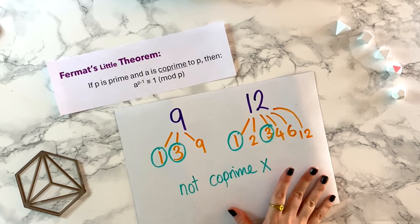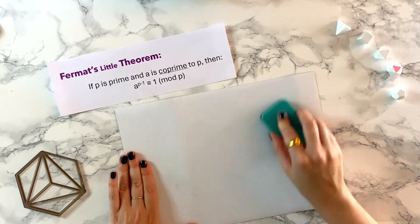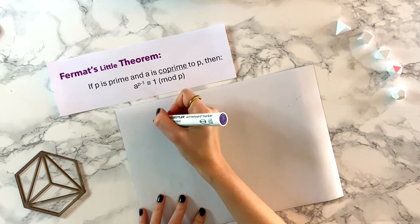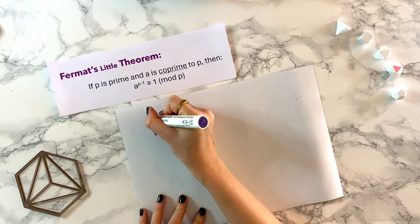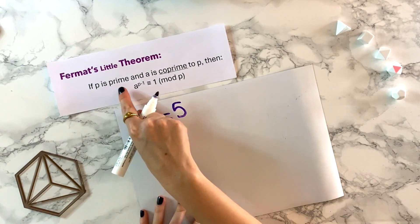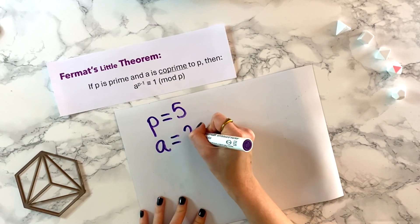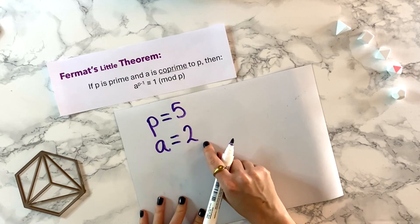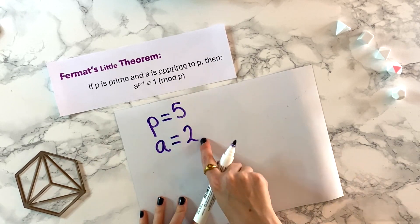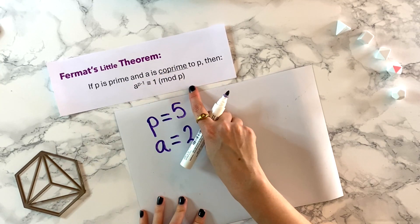So two numbers are co-prime if their only common factor is one. Let's pick two numbers that meet this requirement. Let's say p is five — five is a prime number — and a is equal to two. Now two and five are co-prime; the only common factor that two and five have is one. So that means Fermat's Little Theorem can be used.